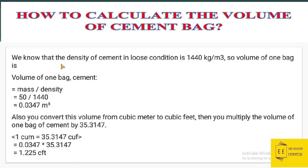We know that the density of cement in loose condition is 1440 kg per cubic meter. So the volume of one bag will be mass divided by density. We know that the mass of one cement bag is 50 kg, so divide it by the density. This will give us the volume of the cement bag.